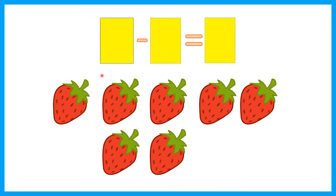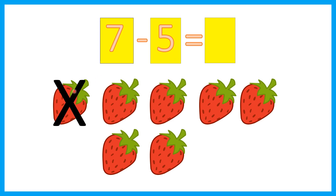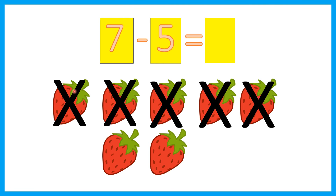How many strawberries are there? 1, 2, 3, 4, 5, 6, 7. Minus five. So we need to take away five. Cross out five. 1, 2, 3, 4, 5. How many left? 1, 2. That's right. Two.